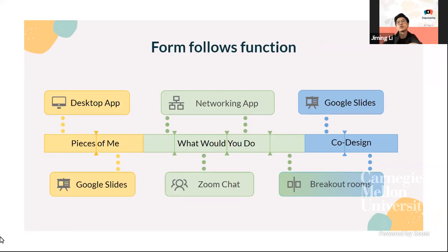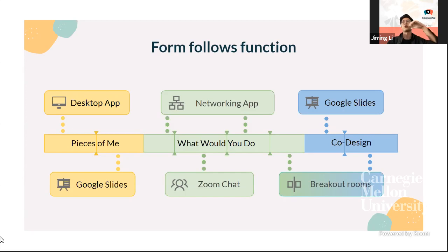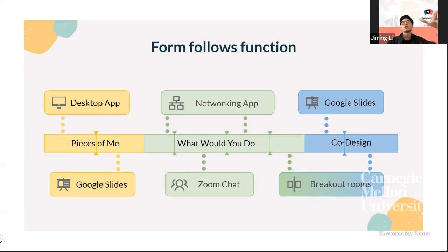The most frequently asked question is: why did we structure the tech the way we did? Activity one, 'Pieces of Me,' is composed of a desktop app with some shared Google Slides. Activity two is made with a networking app, and participants use Zoom with breakout rooms. The co-design part is primarily facilitated by Google Slides and breakout rooms in Zoom. We looked at the needs of the activities first, then built based on the pros and cons of the tech platforms. For co-design especially, the discussion elements were most important and those can be achieved through Zoom and Google Slides — technologies we already had.